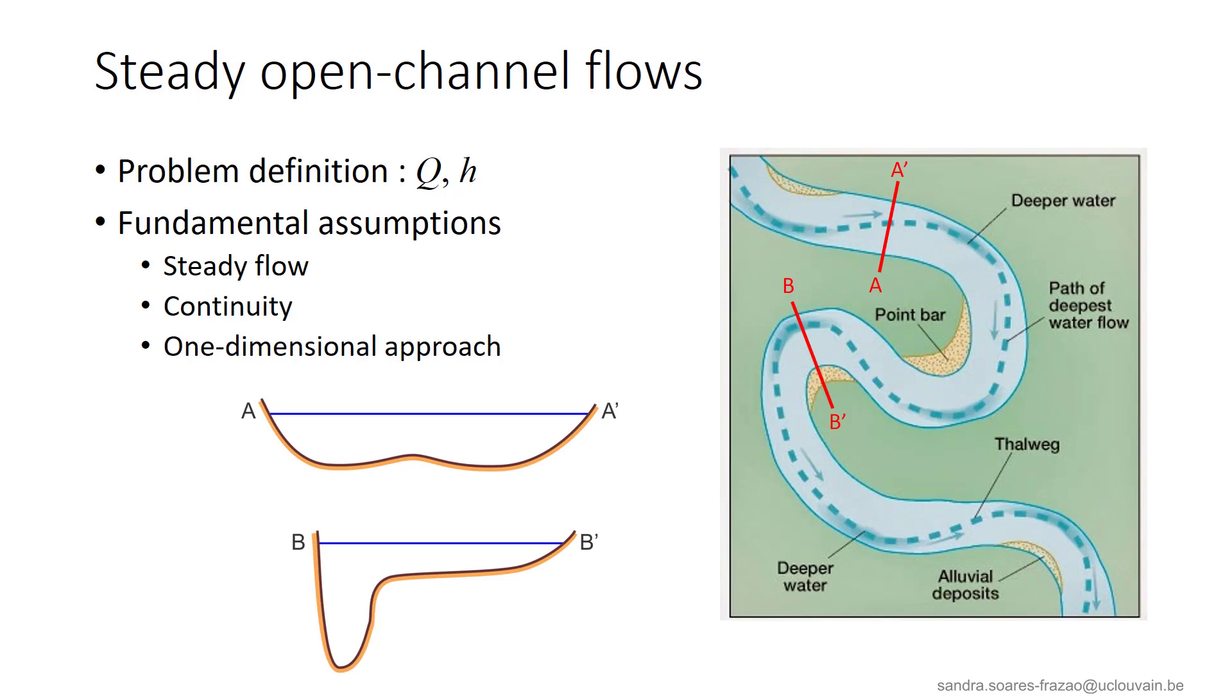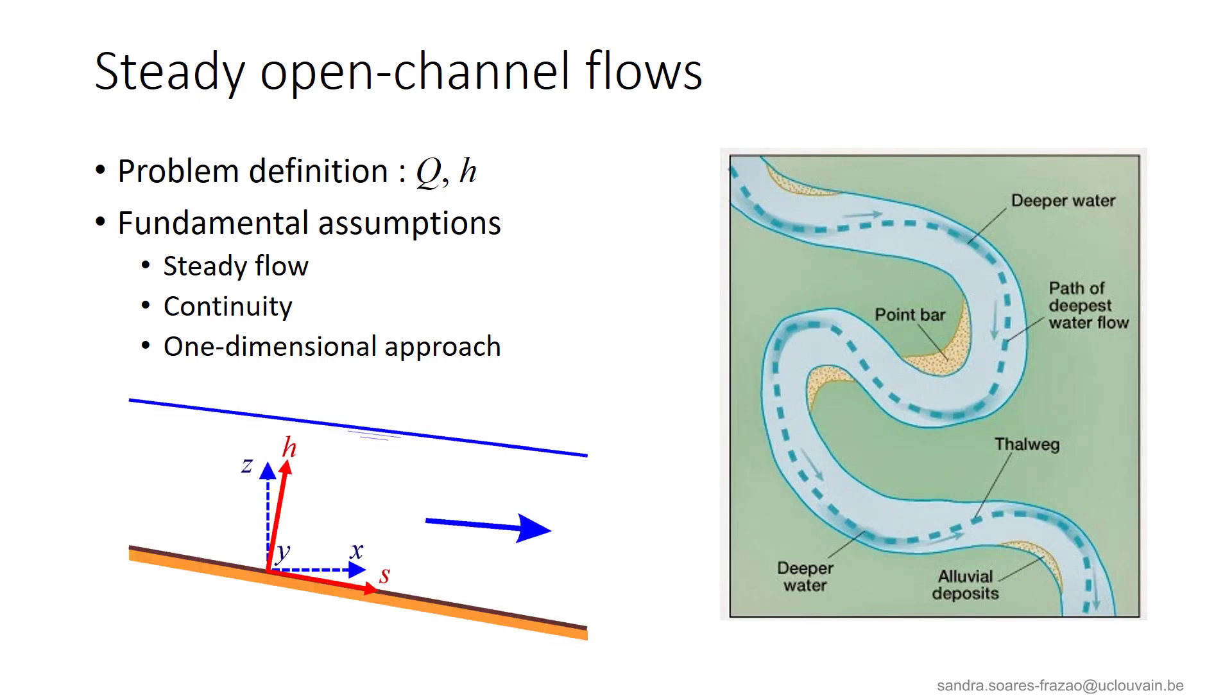Then, a river usually looks like illustrated here. The course is meandering and the cross sections present a deeper part at the outer side of meanders. As we are going to consider only a one-dimensional problem along the river axis, we need to define this axis. Instead of selecting the central axis, we will rather consider the thalweg, that is the line joining all the deepest points in the cross sections. The distances will then be measured along this thalweg with the red axis here, S for the abscissa and H for the water depth, that is measured perpendicular to the bed.